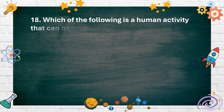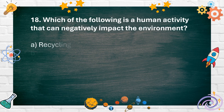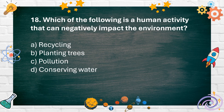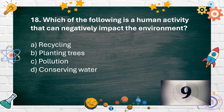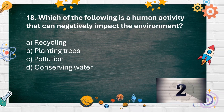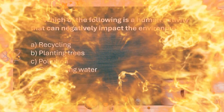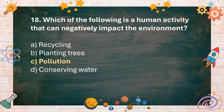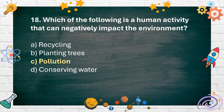Number 18. Which of the following is a human activity that can negatively impact the environment? A. Recycling, B. Planting trees, C. Pollution, D. Conserving water. The answer is C. Pollution.